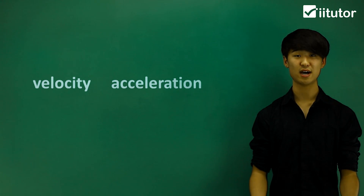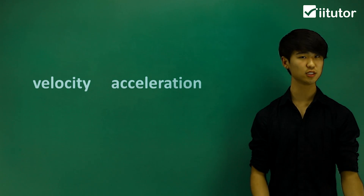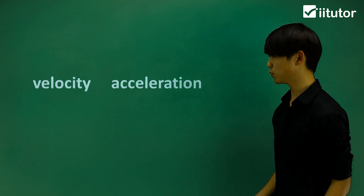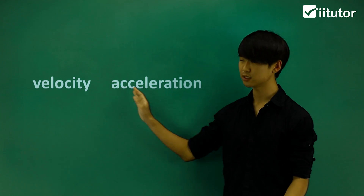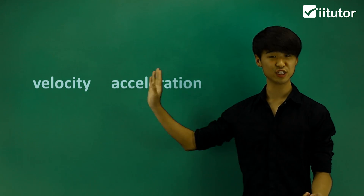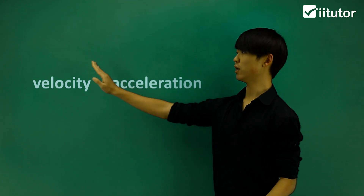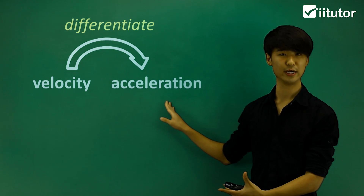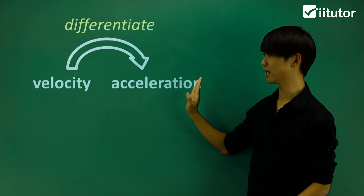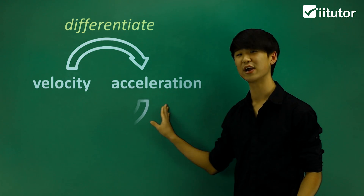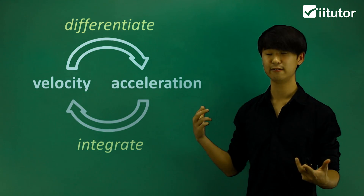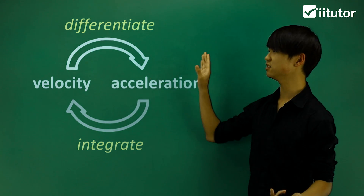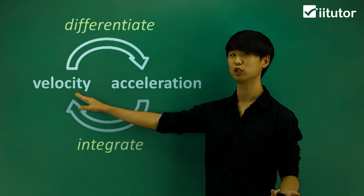We're going to be working with the relationship between velocity and acceleration. When I differentiate velocity, I get acceleration. When I integrate acceleration, I get velocity. So differentiating velocity gives acceleration, and integrating acceleration brings us back to velocity.